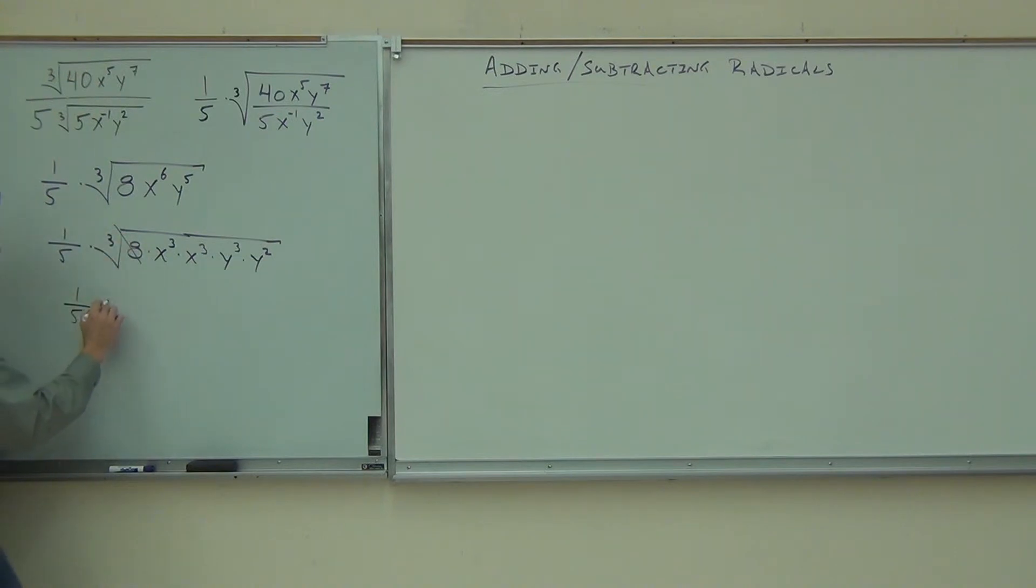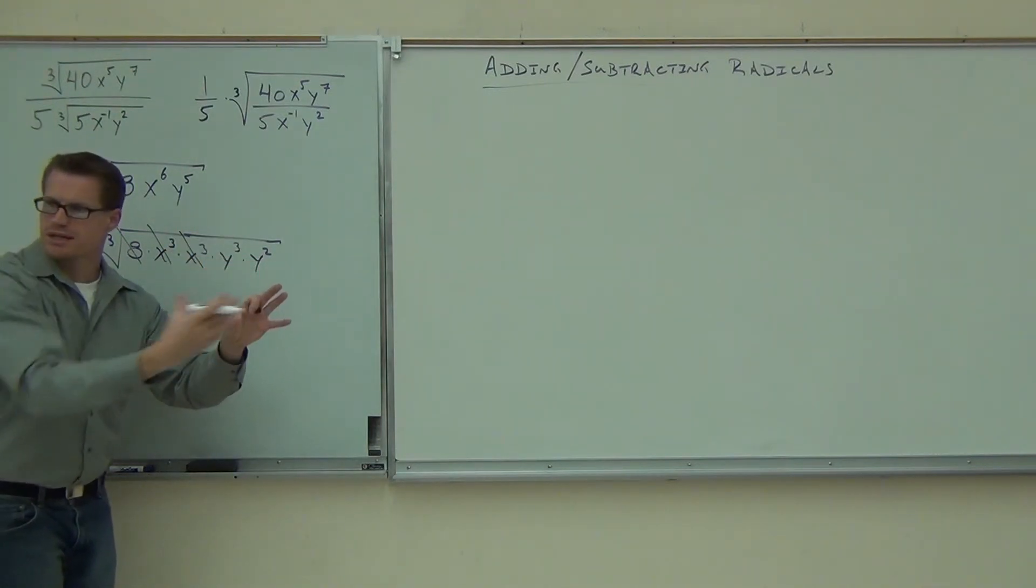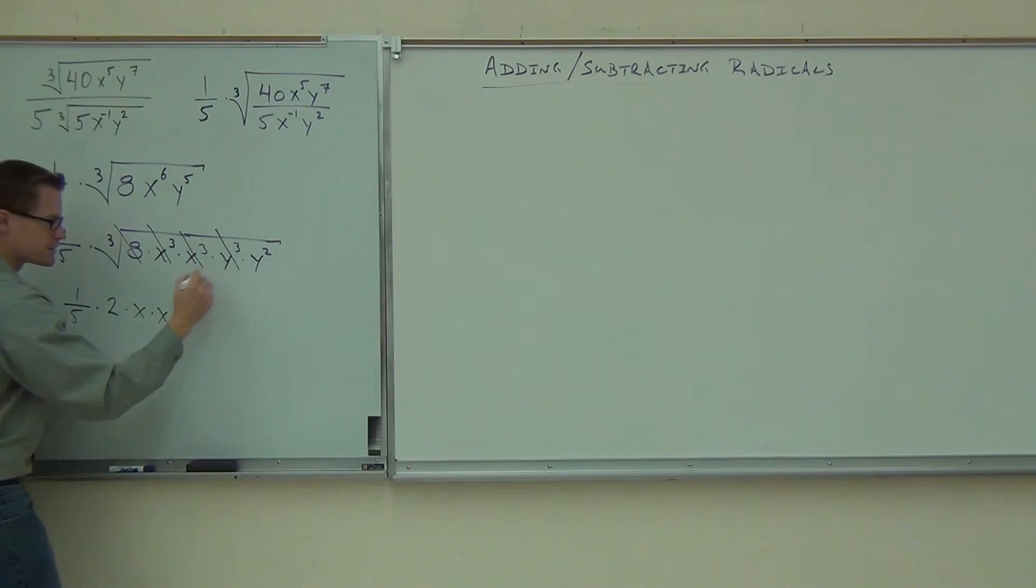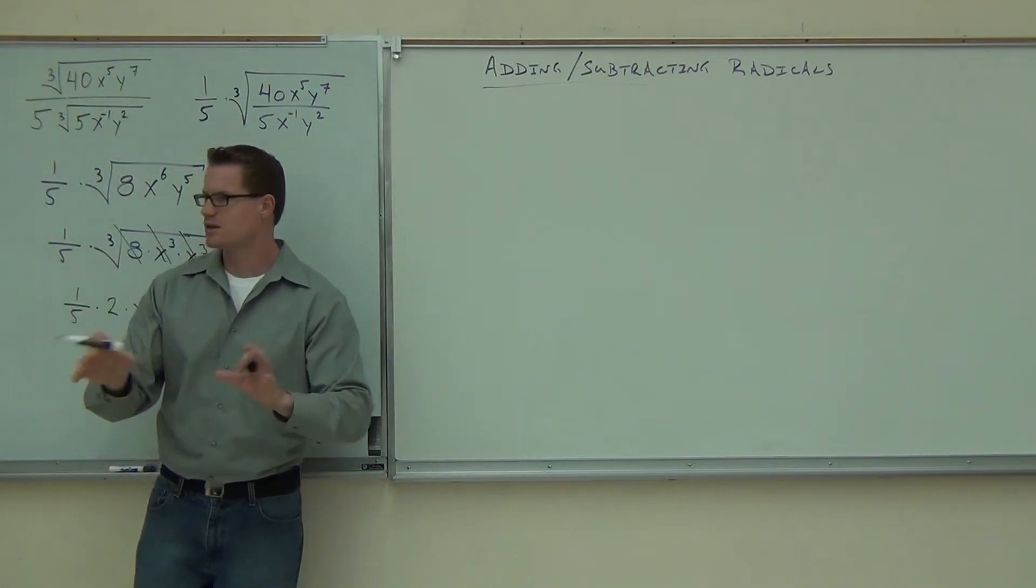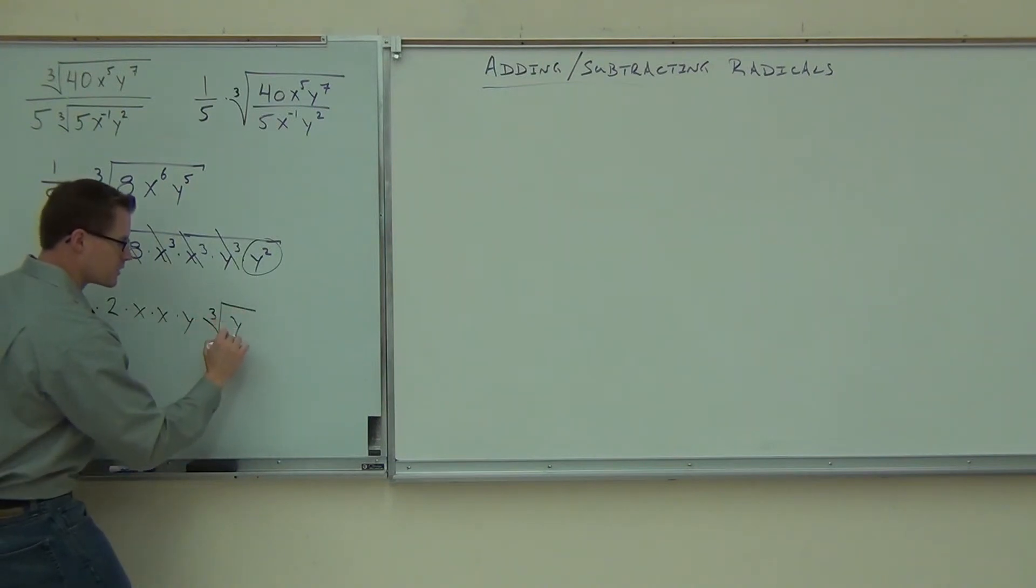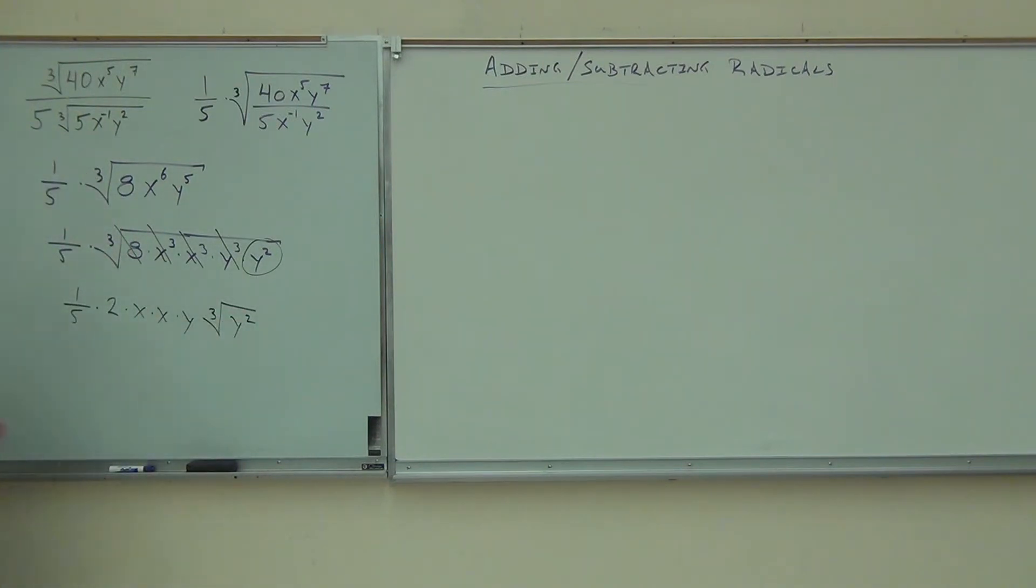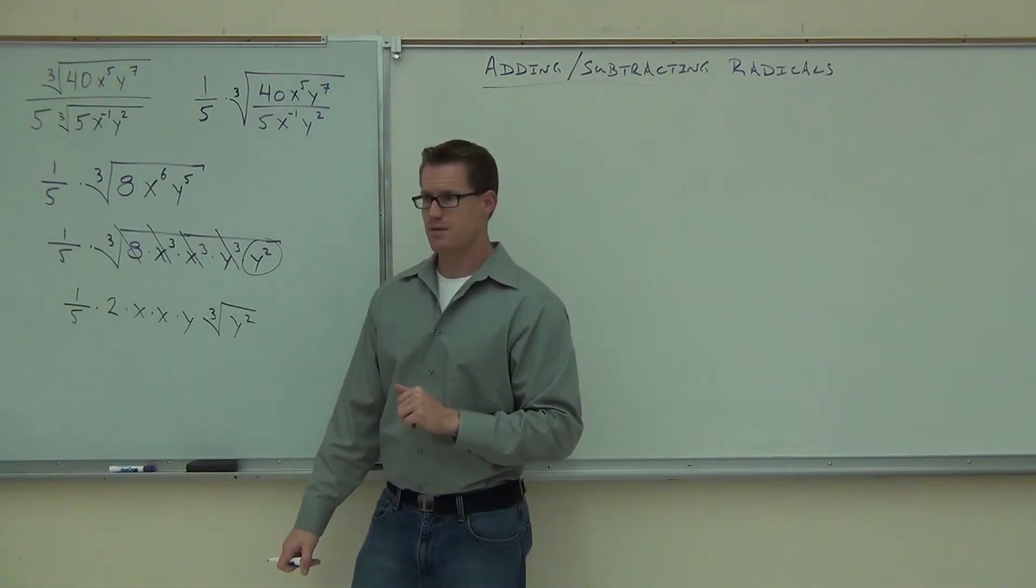That's the fun part, we get to cross some stuff out. We're still going to leave that 1 fifth. The cube root of 8 gives you 2. The cube root of x cubed gives you x. The cube root of x cubed gives you x. That's why we did that, because every time the power matches the root, we get to cross it out and take an x outside or a y outside in this case. And lastly, well, the y squared, the power is less than the root. It's certainly not the same thing, so we can't cross it out, we can't take the y out, we leave it inside of a radical, so we get a cube root of y squared. Did you make it that far? Yeah, I know. Good, alright.